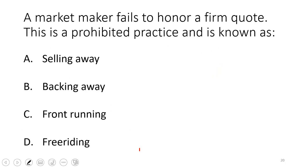A market maker fails to honor a firm quote — that's backing away, a prohibited practice. If I quote 10 by 15 (good for 10 round lots on the bid and 15 on the ask) and you want to buy 1,500 shares but I change my mind — that's backing away. Front-running is trading ahead of customers — also prohibited. Free riding is when a customer buys and sells a security without paying for the buy; the account gets frozen for 90 days. The answer is backing away.